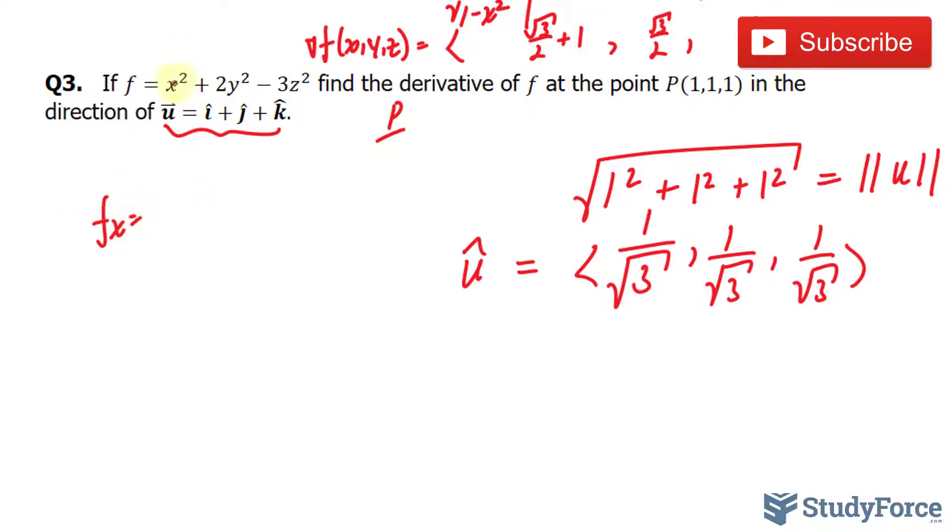Let's start with x, it should be easy. That becomes 2x. At y, that becomes 4y. And at z, that becomes negative 6z.